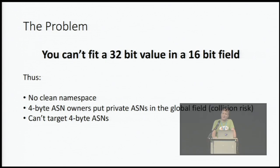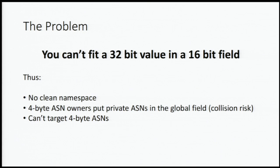Because you can't fit 32-bit in a 16-bit field. So this ruins the whole experience for 4-byte ASN operators. This is ridiculous in my opinion, because one out of five ASNs in the default free zone is a 4-byte ASN. And all those networks are denied their own namespace, because you cannot put your ASN in the first 16 bits — it doesn't fit.